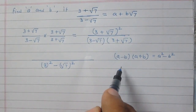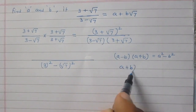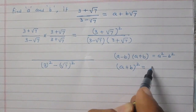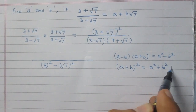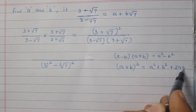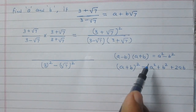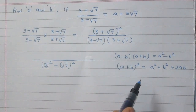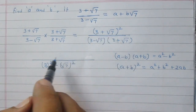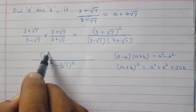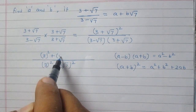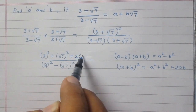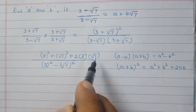The numerator is of the form (a + b) whole squared. We can use the identity (a + b)² = a² + b² + 2ab, where a stands for 3 and b stands for √7. So the numerator can be expressed as a² + b² + 2ab.